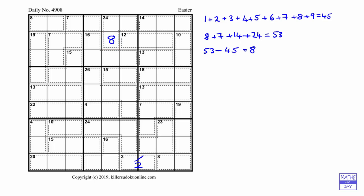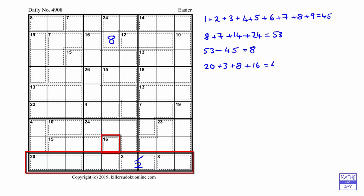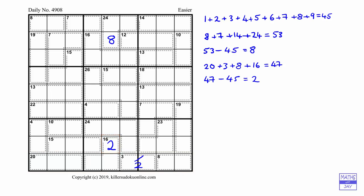In this particular puzzle a similar thing happens at the bottom. Looking at the bottom row, 20, 3, and 8 are only on the bottom line, and 16 has one cell in the line above. So we can work out 20 plus 3 plus 8 plus 16, which is 47. We know the bottom row adds up to 45, so if we subtract we get 2 — giving us that number. So that's using the sum of the numbers in two of the rows.